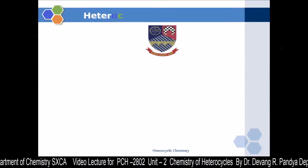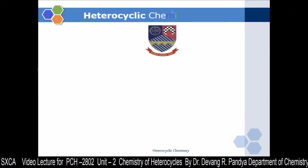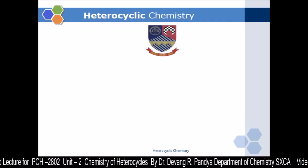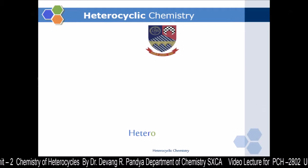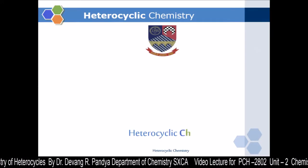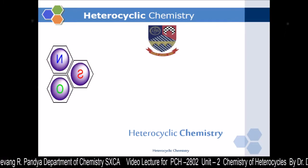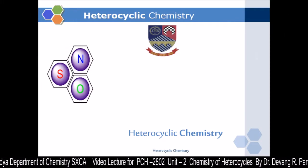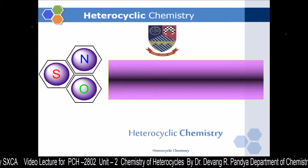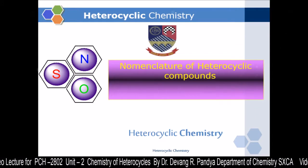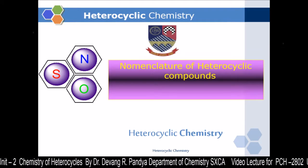Welcome students. Today we are going to take PCH2802, Unit 2B, Chemistry of Heterocycles. Here you can see the heterocyclic compound containing hetero elements nitrogen, oxygen, and sulphur. We are going to discuss today the nomenclature of heterocyclic compounds.